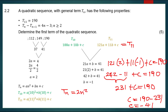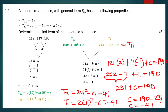Now that we have a, b, and c, the general term is tn equals 2n squared minus n minus 41. To find the first term, substitute n equals 1: 2(1)² minus 1 minus 41 gives 2 minus 1 minus 41, which equals negative 40. So the first term is negative 40.